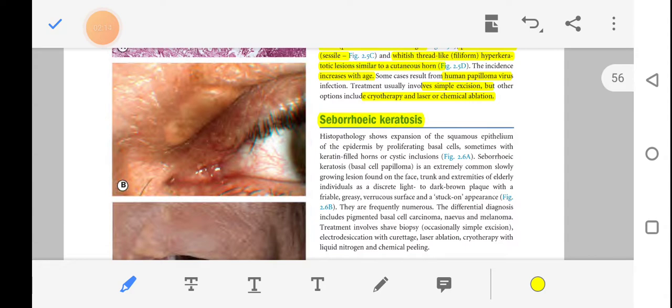This is a sessile lesion. In histopathology, what happens? Our sessile lesions show gravitational epithelium in expansion because of the proliferating basal cells. These basal cells are very proliferated cells.